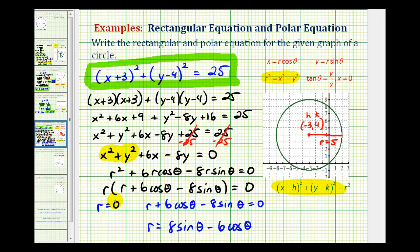And since r equals zero would just be a point at the origin, this should be our polar equation for the given circle. I hope you found this helpful.